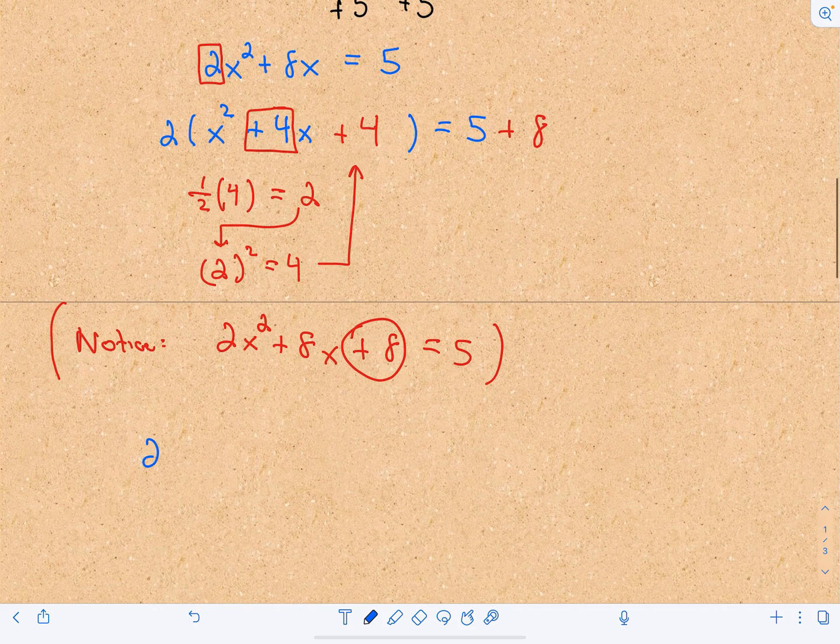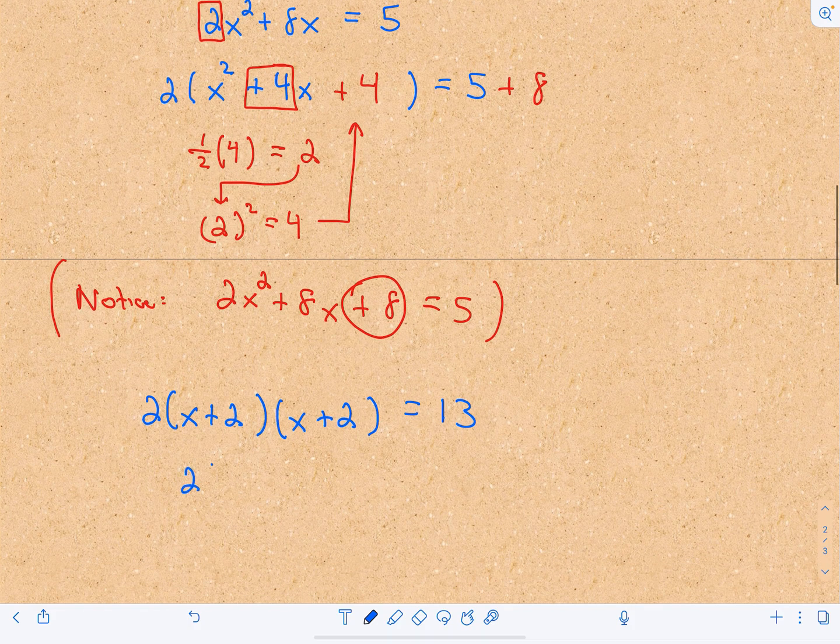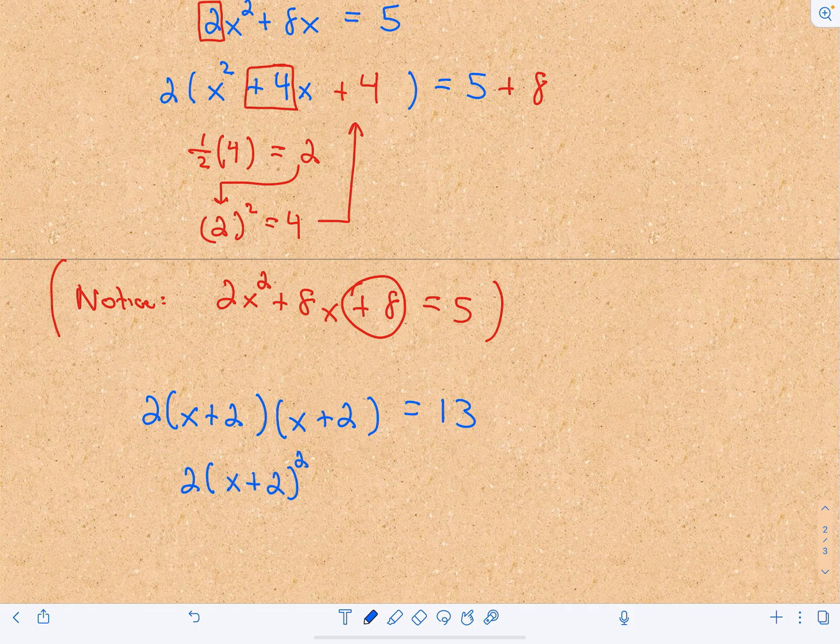The idea now is that the left side, x² + 4x + 4, actually factors as (x + 2)(x + 2). This is a perfect square. I can write that as 2(x + 2)² = 13.